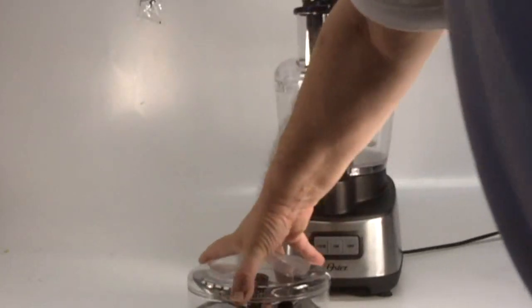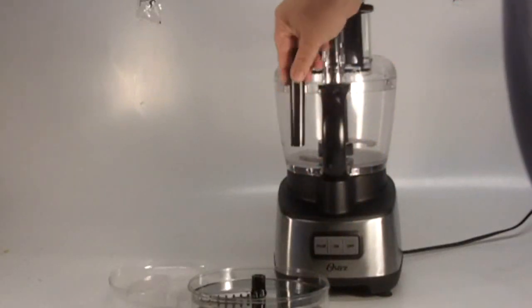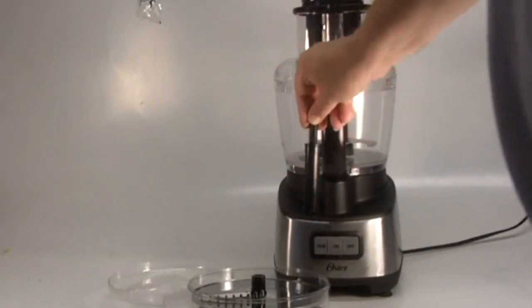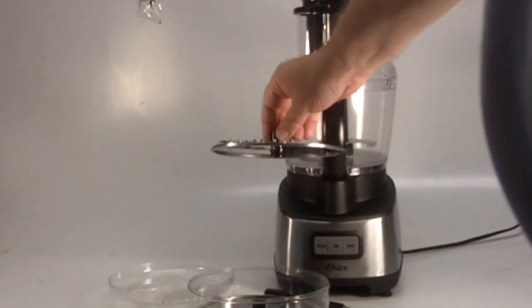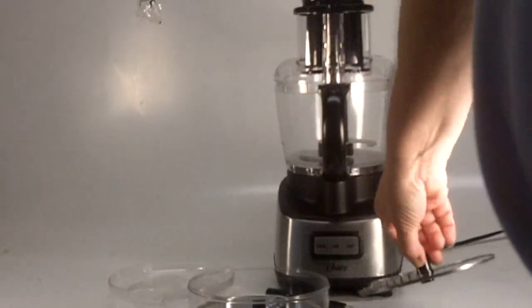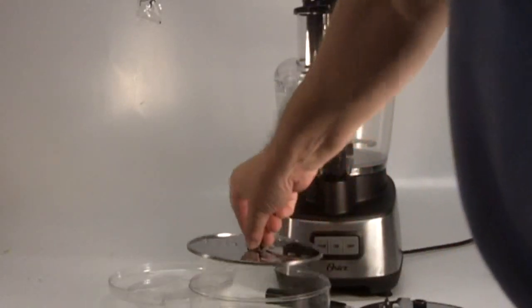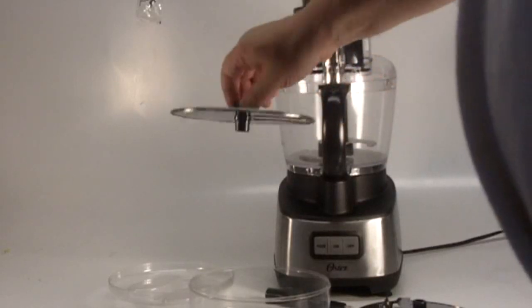It also comes with the slicing and grating blades. This basically will fit into the bowl and then you have a choice of two blades. This is one that makes french fries and slices. This slices and also you flip it over to grate for coleslaw.